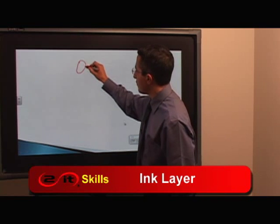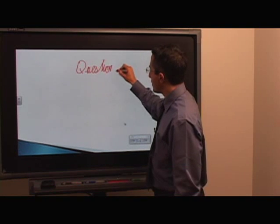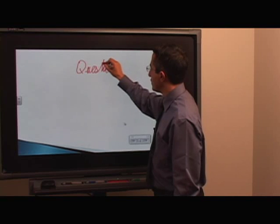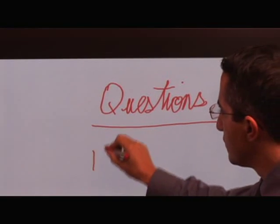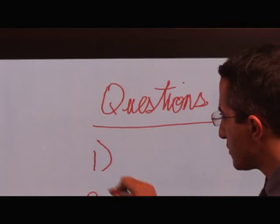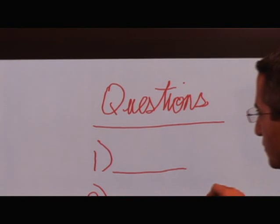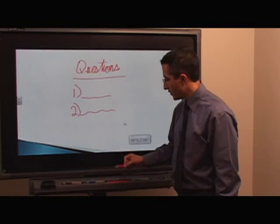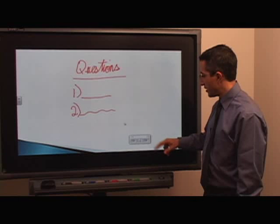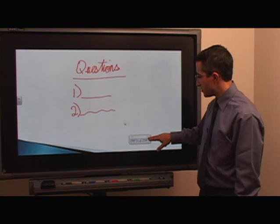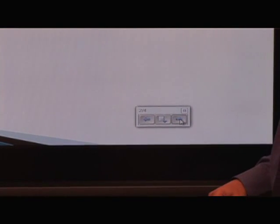I can write whatever I want by simply picking up the pen from the pen tray and writing anything — questions that students have, or any other notes. When I'm done and want to go to the next page, I just choose the button on the right.